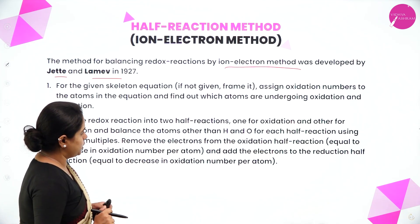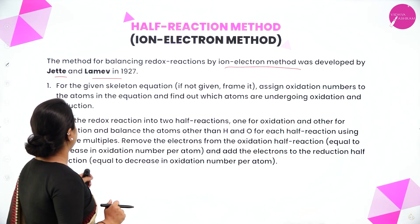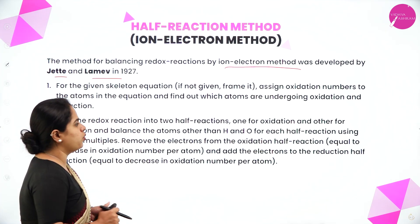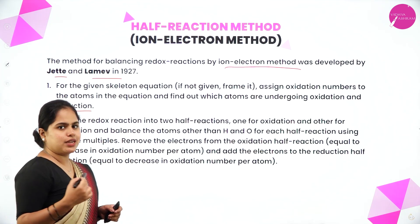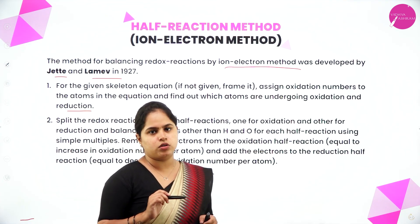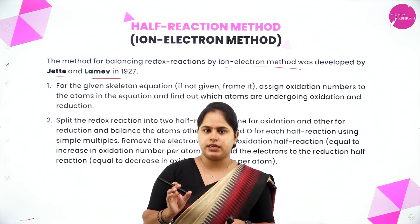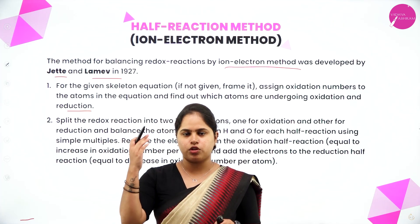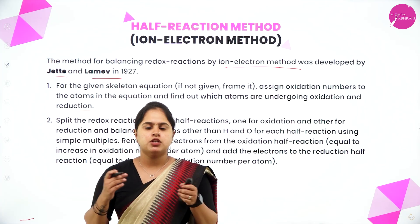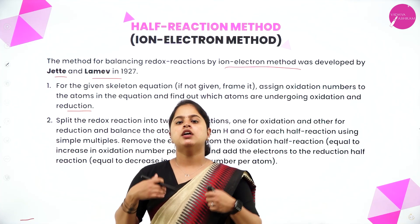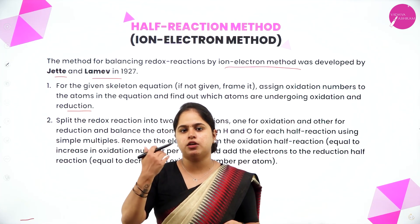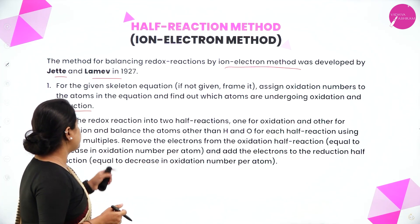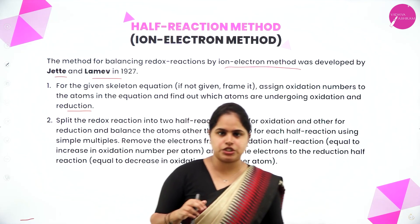For the given skeleton equation, assign oxidation numbers to the atoms and find out which atoms are undergoing oxidation and reduction. That is the same first step we did in the other method. We have to write the skeletal equation, then assign the oxidation numbers based on the rules we have already studied, and identify which atom is undergoing oxidation and which is undergoing reduction.